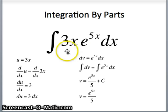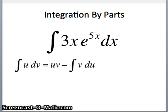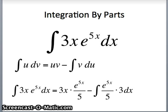Integral of u dv, 3x e to the 5x dx is uv: 3x times e to the 5x over 5 minus the integral of v du: e to the 5x over 5 times 3 dx. So making those substitutions, we're now here.